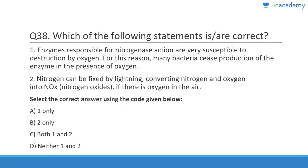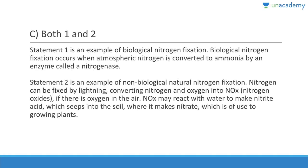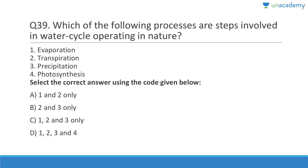Question 38: Enzymes responsible for nitrogenase action are very susceptible to destruction by oxygen — for this reason, many bacteria cease production of the enzyme in the presence of oxygen. Nitrogen can also be fixed by lightning, converting nitrogen and oxygen into NOx. Both statements are correct. Statement 1 is an example of biological nitrogen fixation, occurring when atmospheric nitrogen is converted to ammonia by an enzyme called nitrogenase. Statement 2 is non-biological nitrogen fixation via lightning.